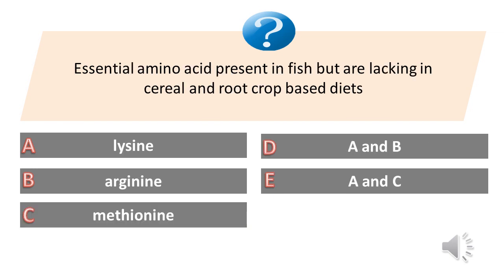Essential amino acid present in fish but lacking in cereal and root crop based diets. A. Lysine. B. Arginine. C. Methionine. D. A and B. E. A and C. Answer is E. A and C — Lysine and Methionine.